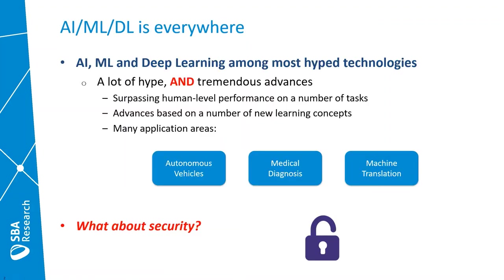AI, machine learning and deep learning are among the most hyped technologies currently, and while there's a lot of hype there's also tremendous advancements in these technologies that justify the hype. On some tasks these technologies are surpassing human level performance, and this is mostly based on a number of new learning concepts. There are many application areas such as autonomous vehicles, medical diagnosis, or machine translation. But one aspect is still rather unexplored, and that's the security of all these technologies.